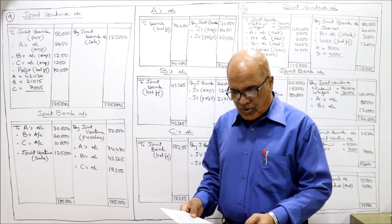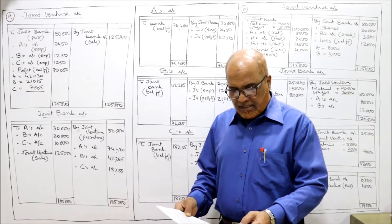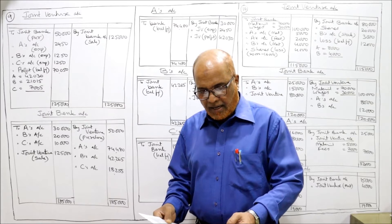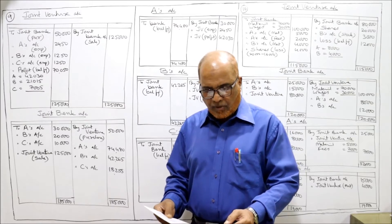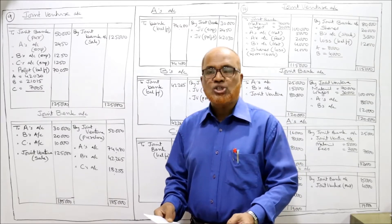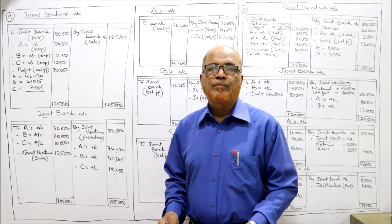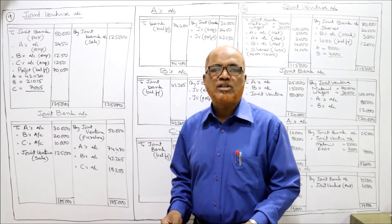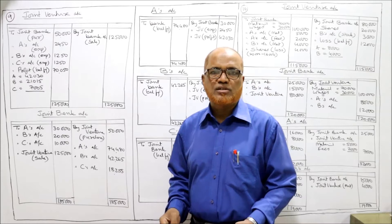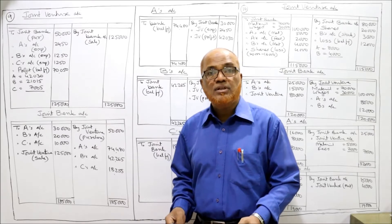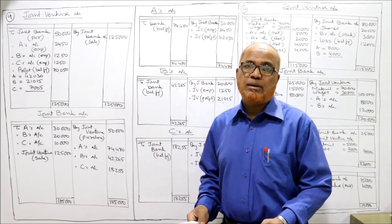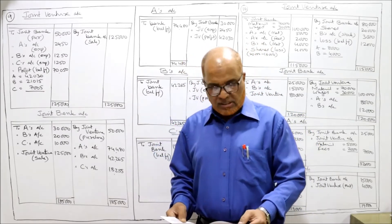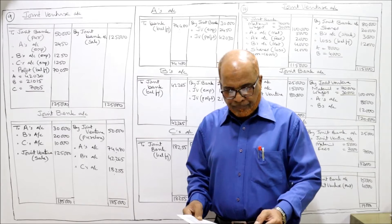Ninth problem: A, B and C entered into a joint venture and agreed to divide the profits in the ratio of 6 is to 3 is to 1. So far we have seen only two co-venturers, but here we have three co-venturers A, B and C. The profit sharing ratio is 6:3:1.